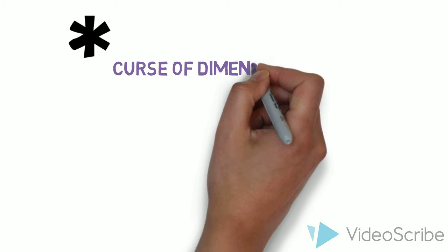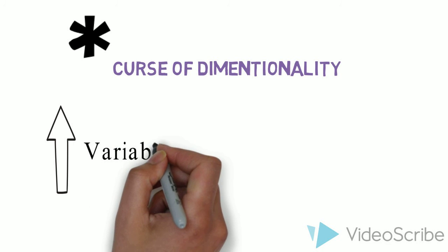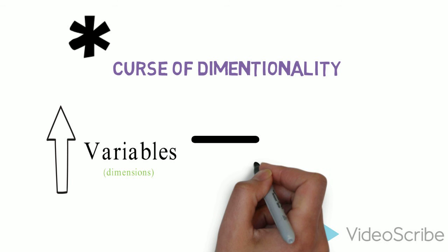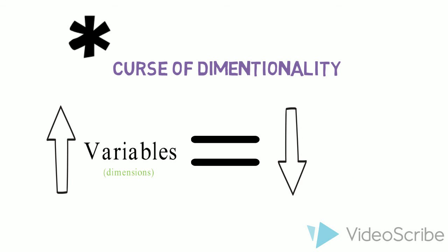Side note, a common problem to be aware of is the curse of dimensionality. This is where the more variables you have the more dimensions you have to analyze and so the data you input becomes sparser because the volume it has to fill becomes exponentially larger therefore reducing the statistical accuracy.